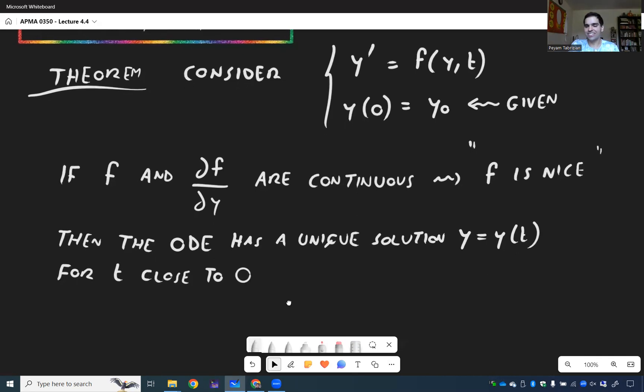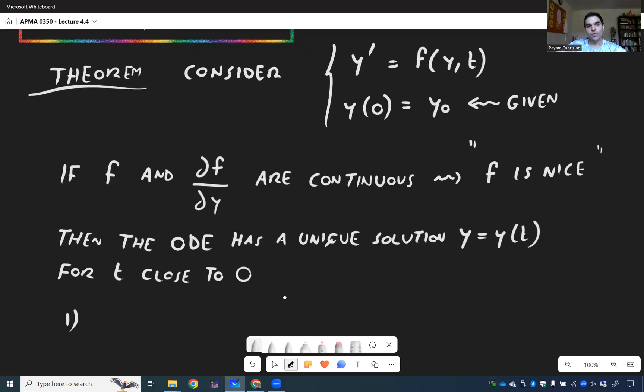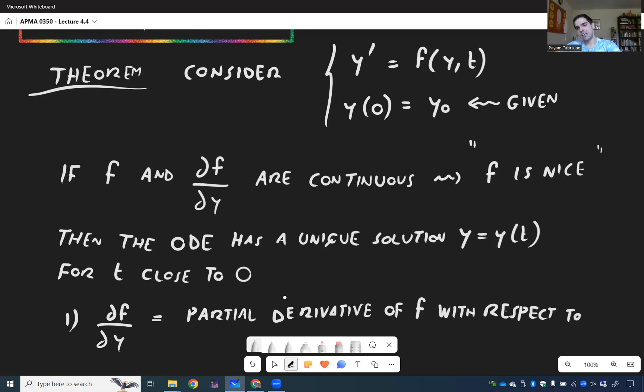However, let's elaborate on this a little bit. So because I'm sure you must have lots of questions about this. So first of all, this weird symbol, ∂f/∂y, that's what's called the partial derivative of f with respect to y. And all this means is you differentiate f with respect to y, treating t as a constant. You just differentiate it with respect to one variable.